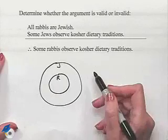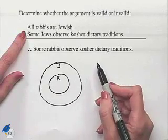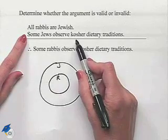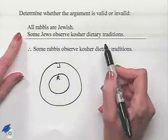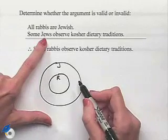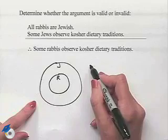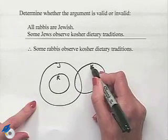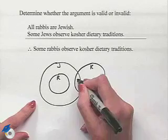Our second premise: some Jews observe kosher dietary traditions. We'll need another set standing for those who observe kosher dietary traditions. We know this set will overlap with the set of Jews, but we don't know how much — so we draw the set knowing there's something in the intersection.